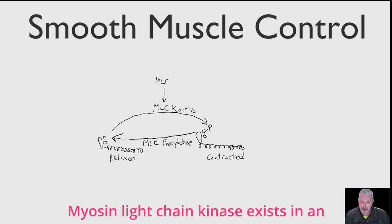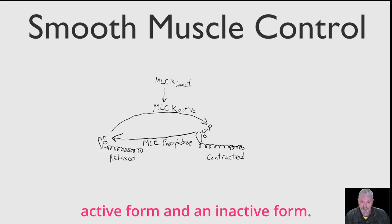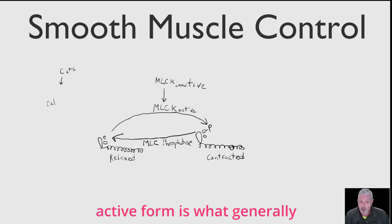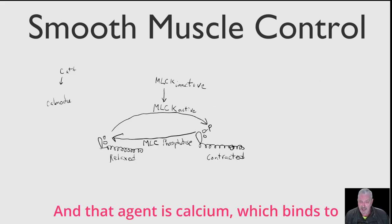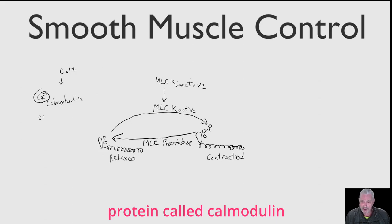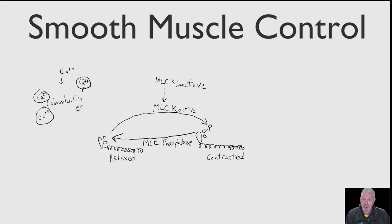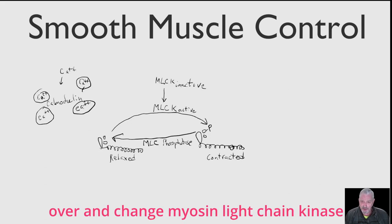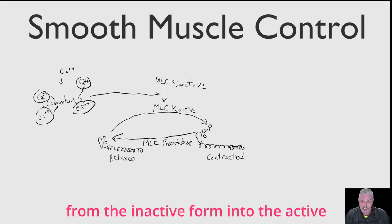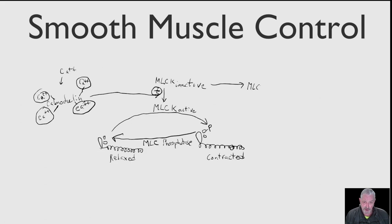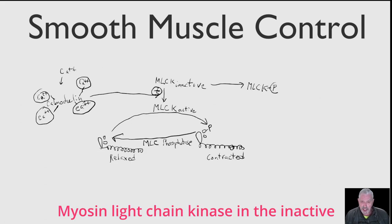Myosin light chain kinase exists in an active form and an inactive form, and the thing that makes myosin light chain kinase into the active form is what generally contracts smooth muscle. That agent is calcium, which binds to a calcium-binding protein called calmodulin in a four-to-one ratio. Four calciums will bind to a single calmodulin molecule, and that calmodulin molecule will then go over and change myosin light chain kinase from the inactive form into the active form, where it can start putting phosphate groups onto the light chains.